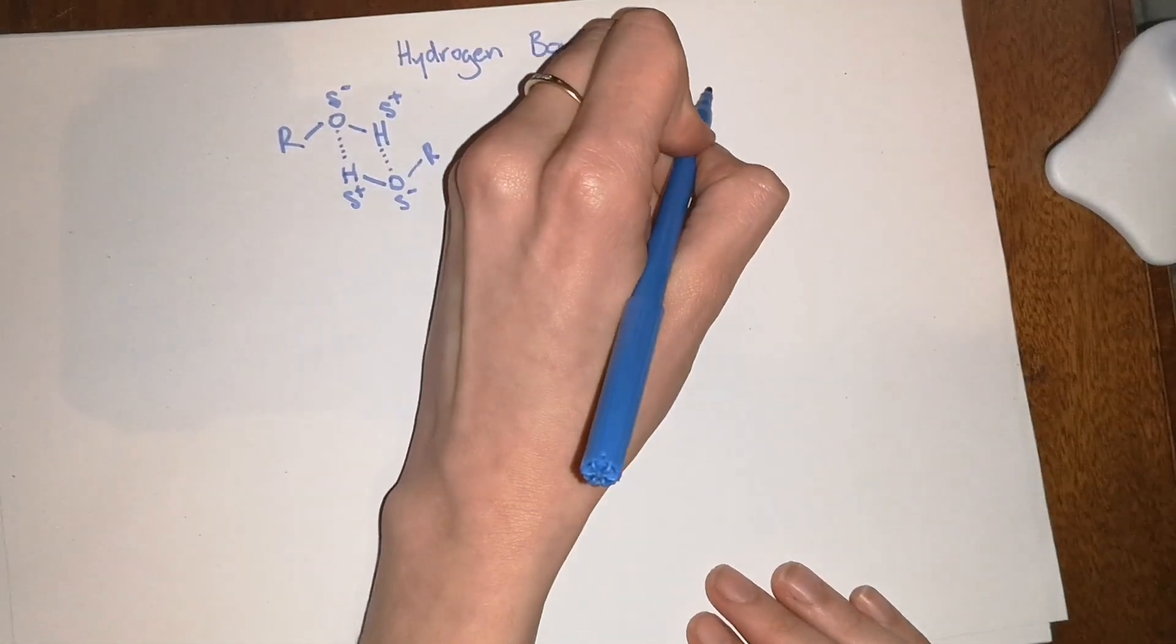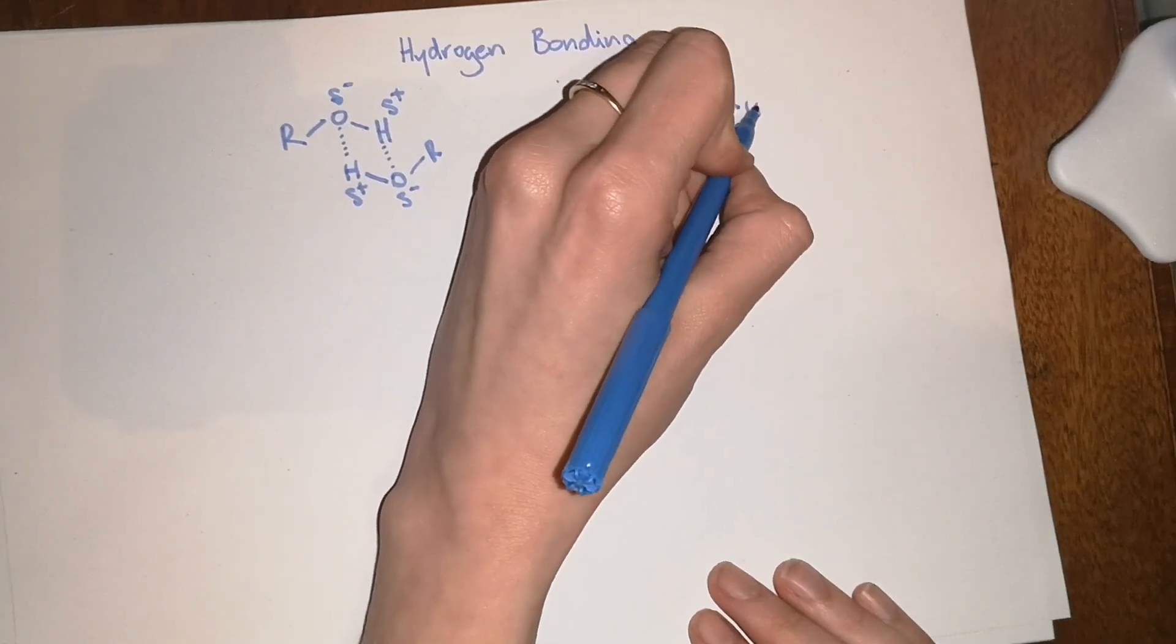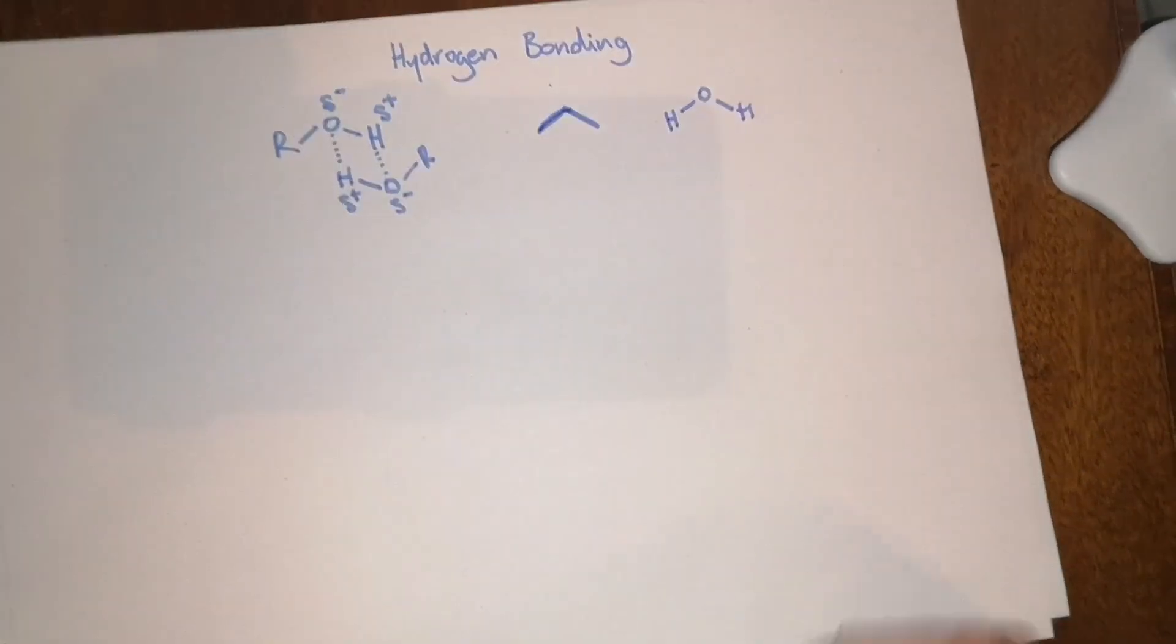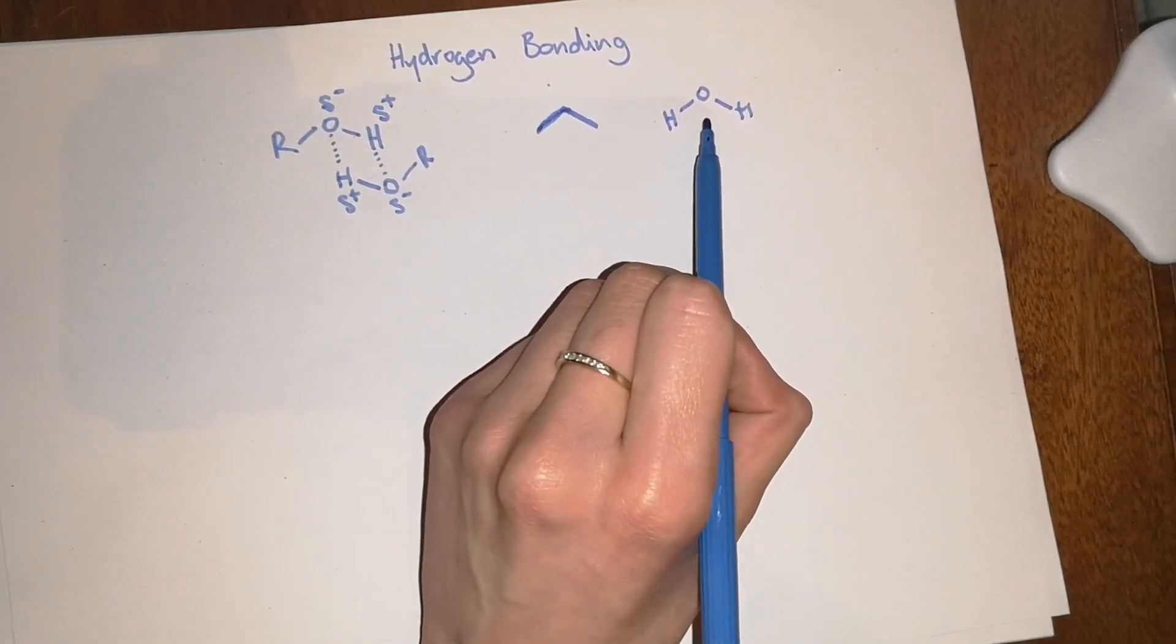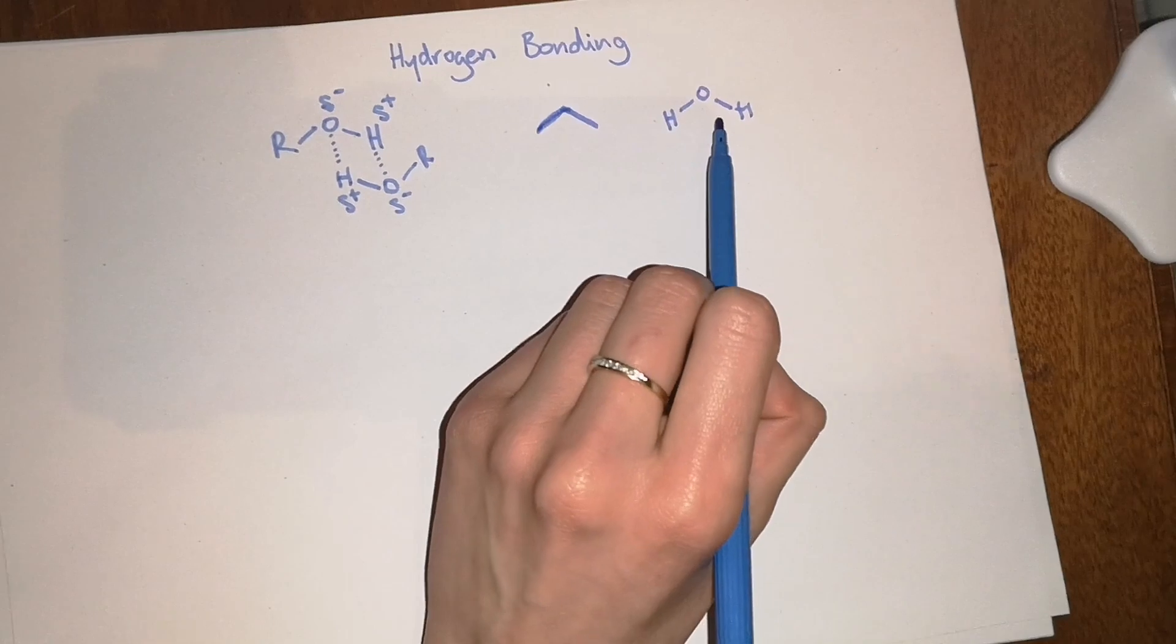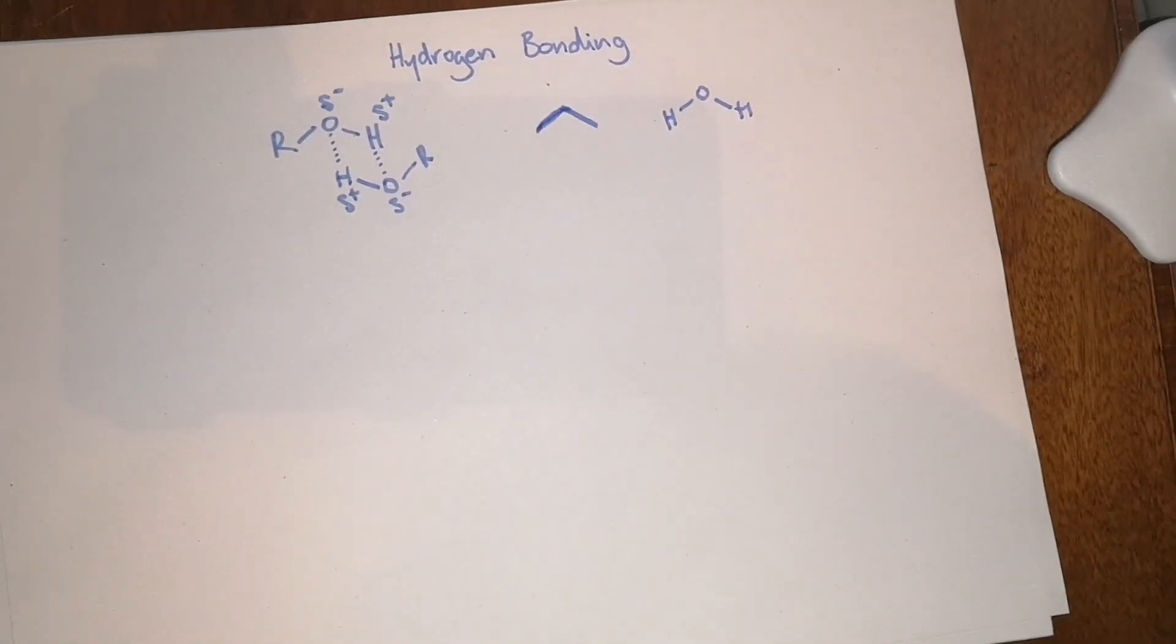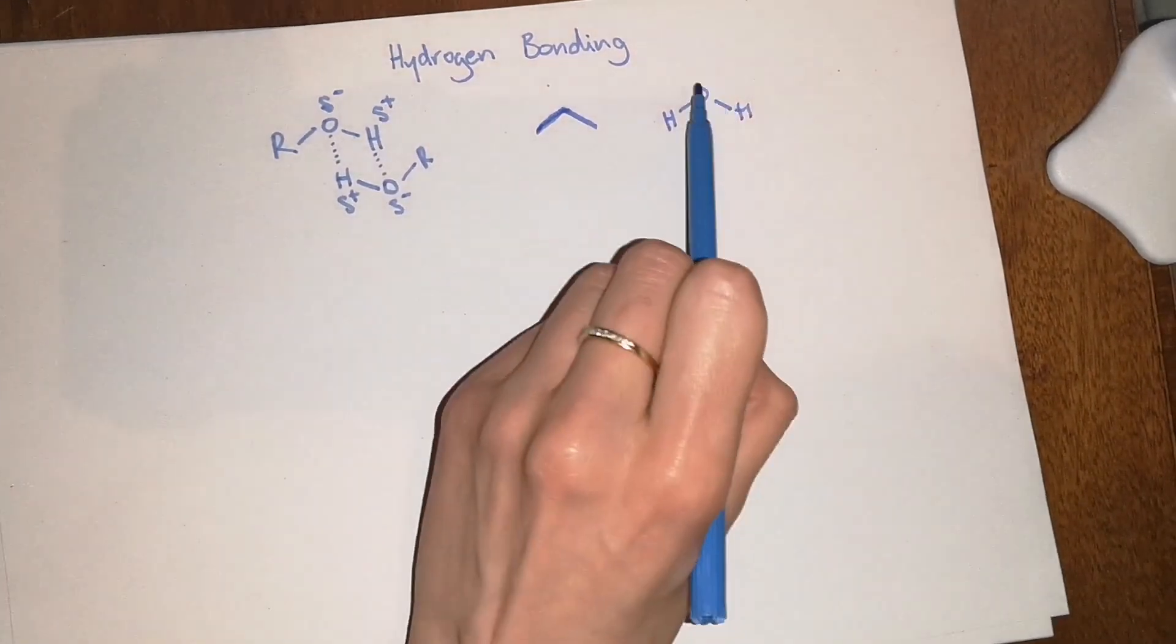Whereas if you take a water molecule, which is even smaller, and usually smaller things tend to be more volatile, water has a boiling point as you know of 100 degrees. That's an exceptionally high boiling point for such a small molecule and the reason for that comes back to hydrogen bonding.